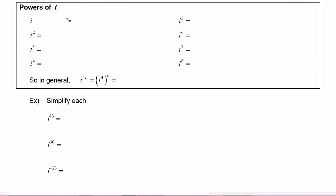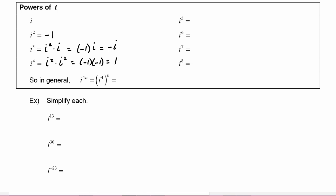Here we're going to explore powers of i. We know that i to the first is just i. i² is negative 1. i³ can be thought of as i² times i — we know i² is negative 1 — so this is negative 1 times i, which is just negative i. i to the fourth is i² times i², which is negative 1 times negative 1, which is equal to 1.